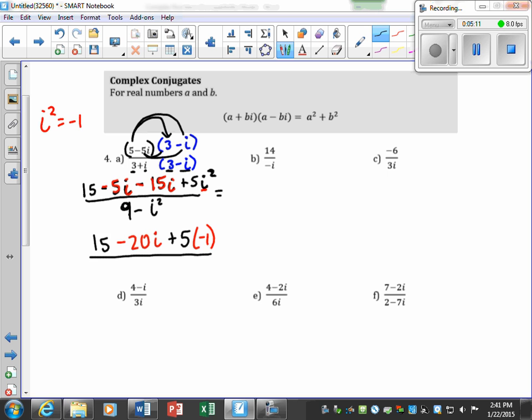Now in the numerator, I'm going to bring down my 9 minus, and in place of i squared, I'm going to put a parenthesis, and this i squared is going to turn into a negative 1. So we'll continue across to simplify, so I'm going to have 15 minus 20i minus 5 over 9 plus 1, which is going to be 10.